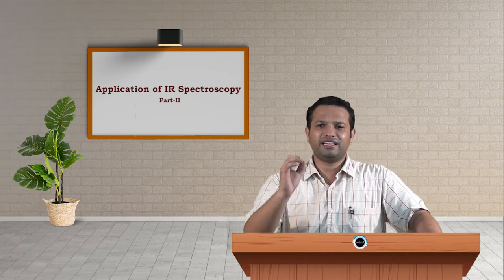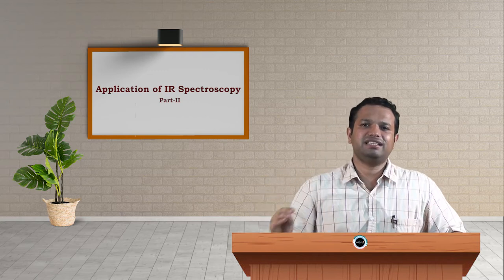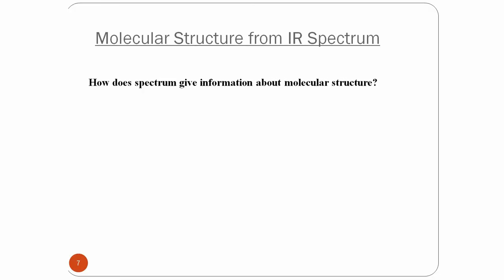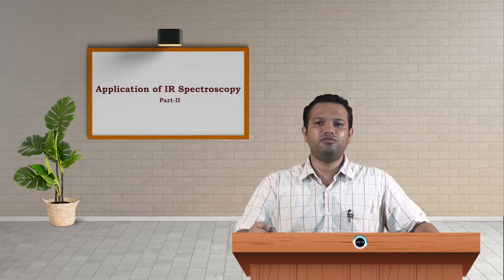So let us see what all we can observe in the spectrum and how we can study the structure. We have two questions in mind: how does the spectrum give information about the molecular structure, and how does the graph form give us a structure? The answer is the structure controls the number of photons absorbed. Depending upon the structure, the number of photons absorbed will vary because the energy taken by the compound for excitation is different.